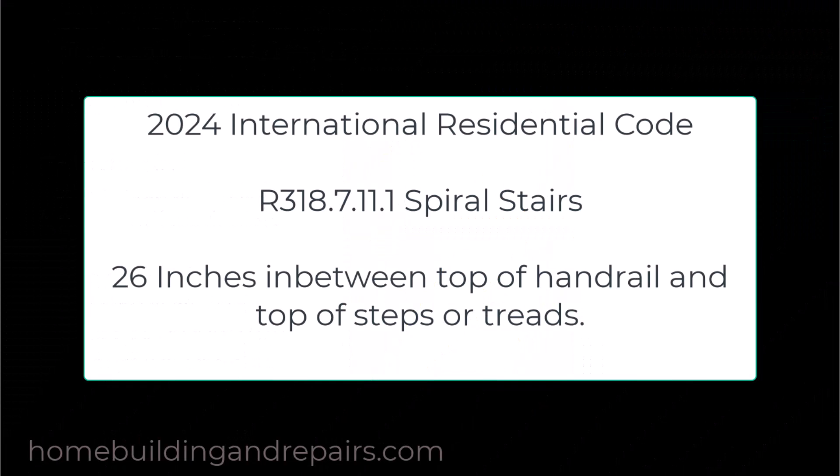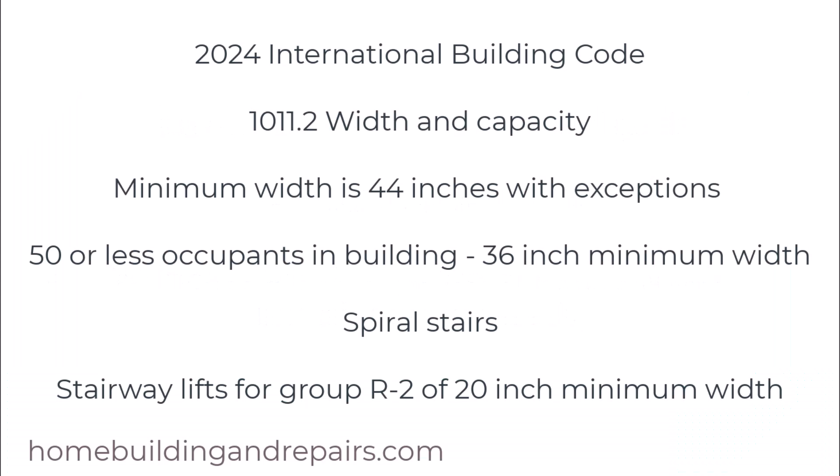If you're building spiral stairs, you're looking at 26 inches for the minimum measurement. And if we go to the International Building Codebook, you can see a minimum width of 44 inches with exceptions — one of those exceptions would be for 50 or less occupants in a building, which requires 36 inches.